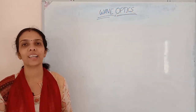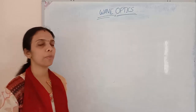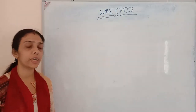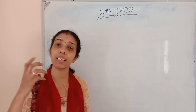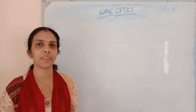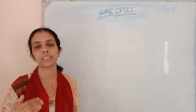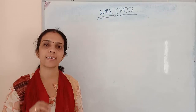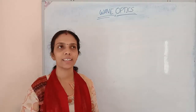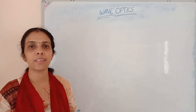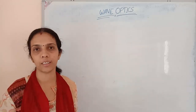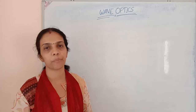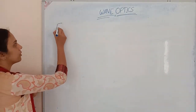Hello, welcome back to Learn Physics. In today's topic we are continuing with our wave optics portion. In the last class we learned about the theory behind interference, and the constructive and destructive interference patterns. We also learned the conditions to obtain constructive and destructive interference — the path difference and phase difference in both cases. Today we are going to find out the expression for fringe width.